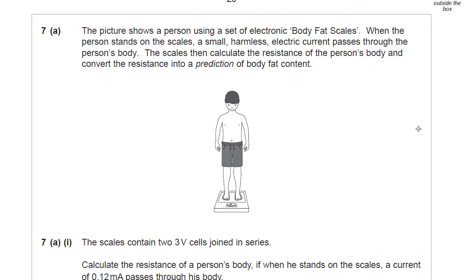When the person stands on the scales, a small, harmless electric current passes through the person's body. The scales then calculate the resistance of the person's body and convert resistance into a prediction of body fat content.